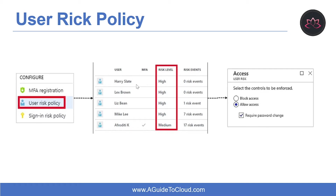This is an example showing the configuration of a user risk policy applied. With the information provided by the risky user report, administrators can find which users are at risk and have had risk remediated or dismissed. This gives more details about detection, history of all risky sign-ins, and risk history. Administrators can then act on these events — reset the user password, confirm the user account is compromised, dismiss the user risk, block the user from sign-in, or investigate further using Azure ATP.